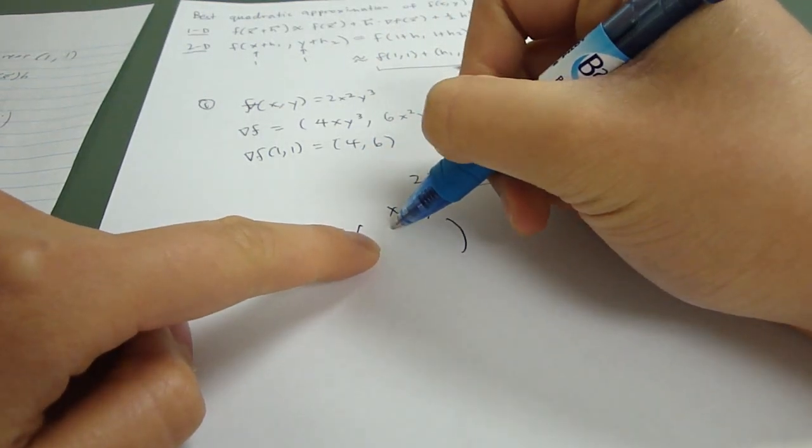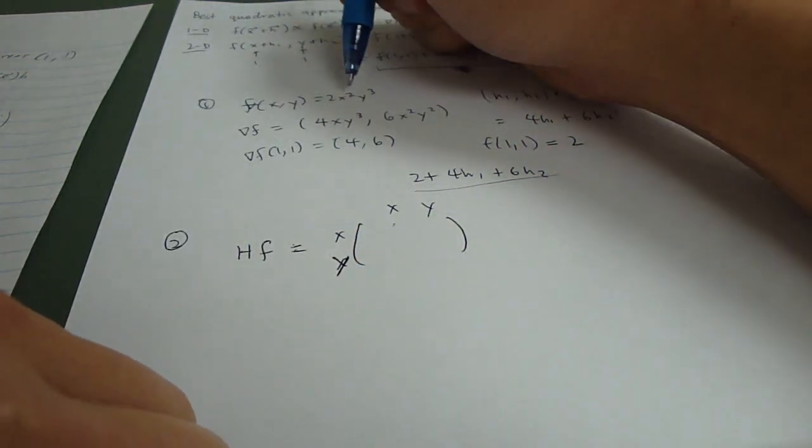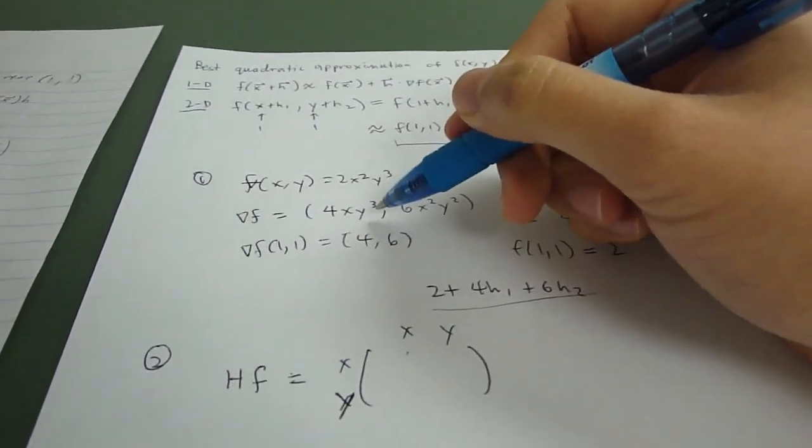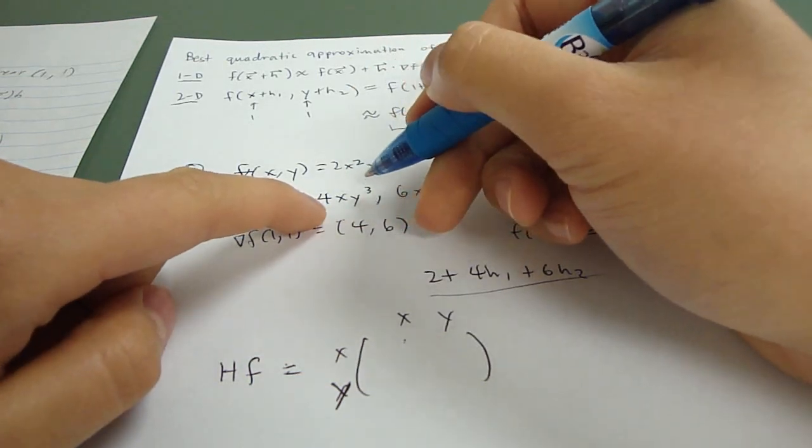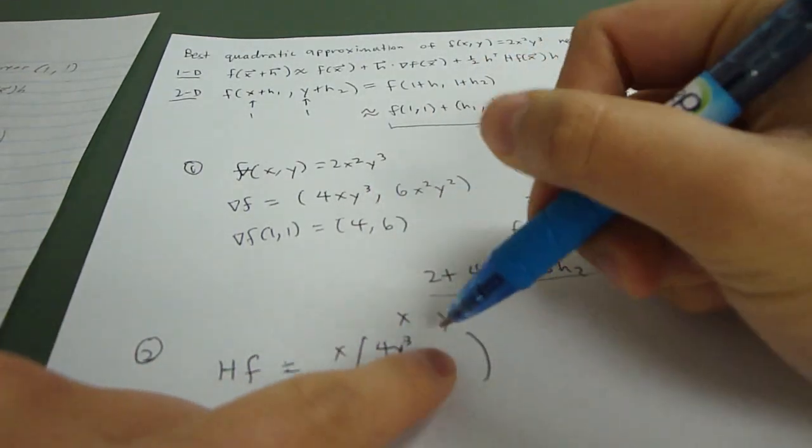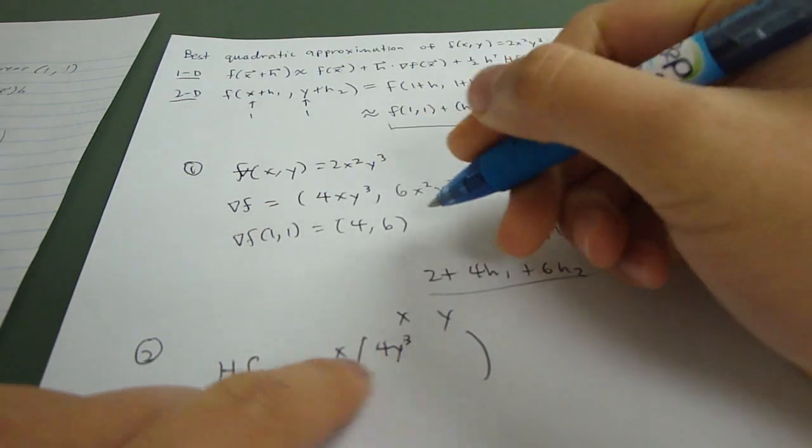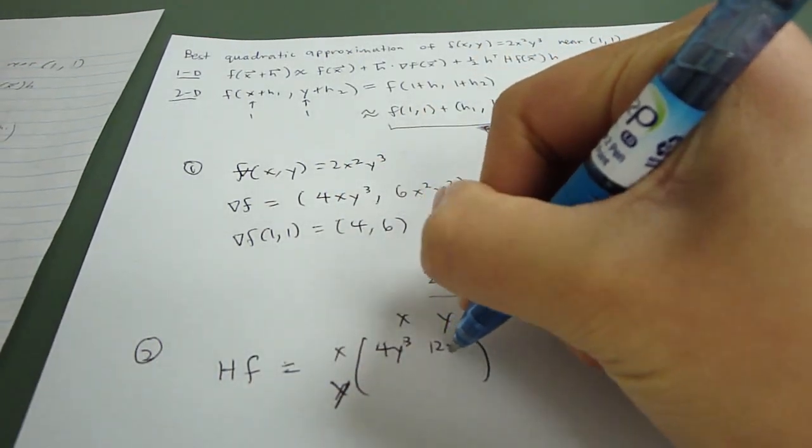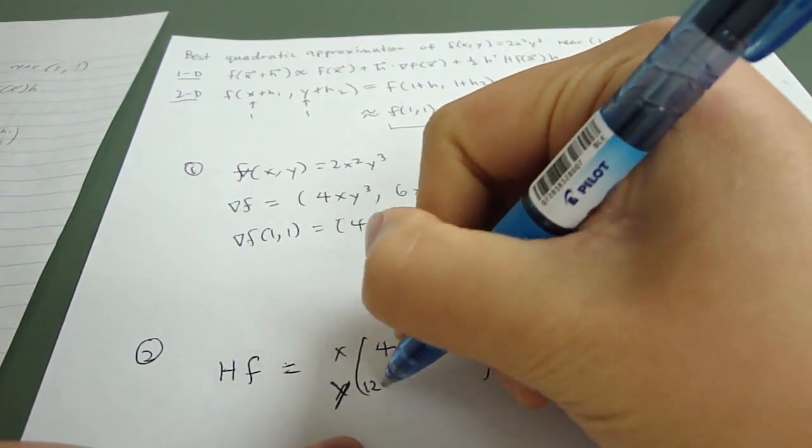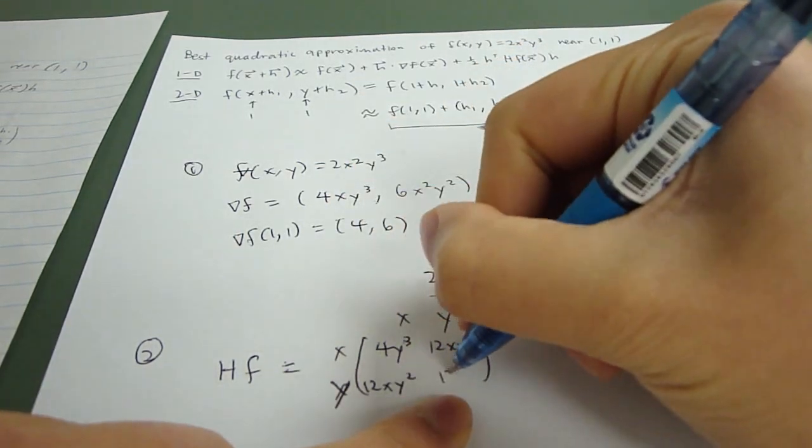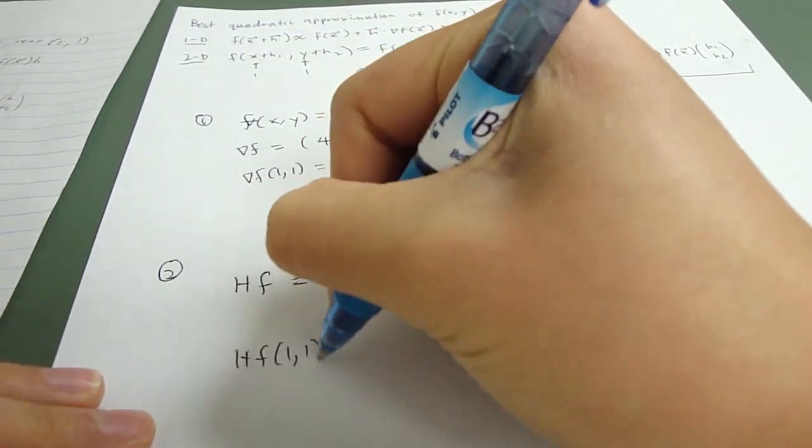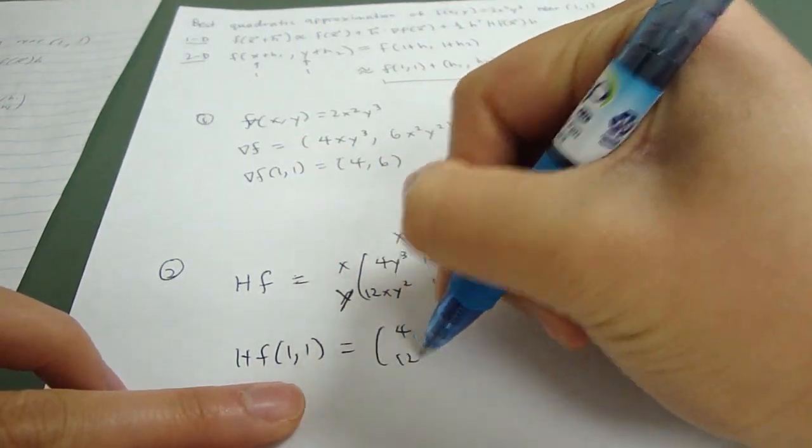You take the partial derivative of the original in respect to x twice. So, this is already done once, here. This is already done once. So, take the partial derivative in respect to x once more. You would get 4y cubed. This, take it in respect to y, then in respect to x. This is once y already, so x would be 12xy squared. Then, this one is, take it once of x, then y. So, and this is y twice. Plugging back in the point, you get 4, 12, 12, 12.